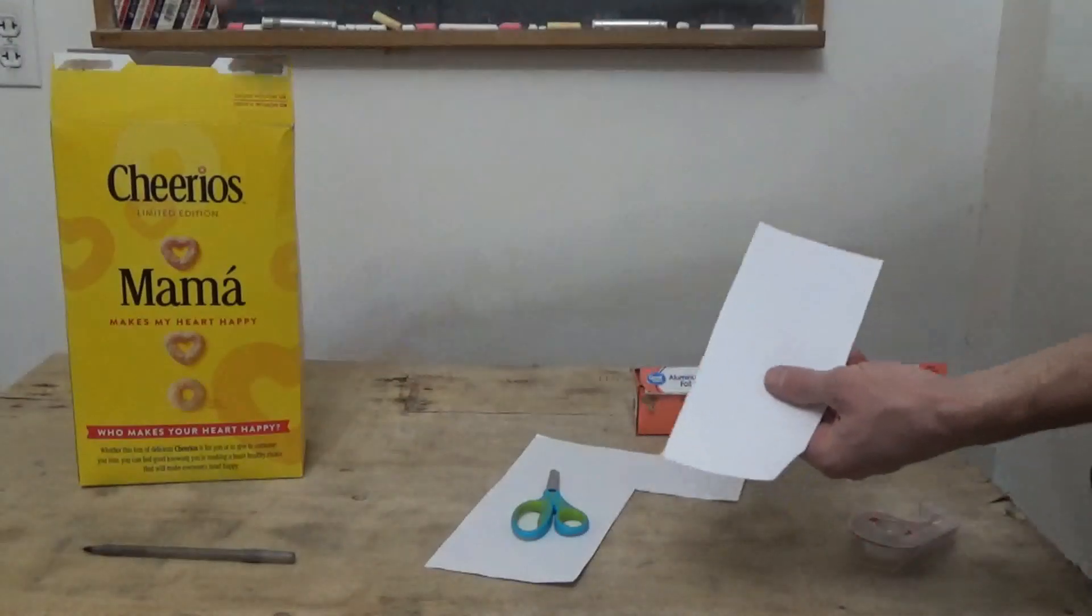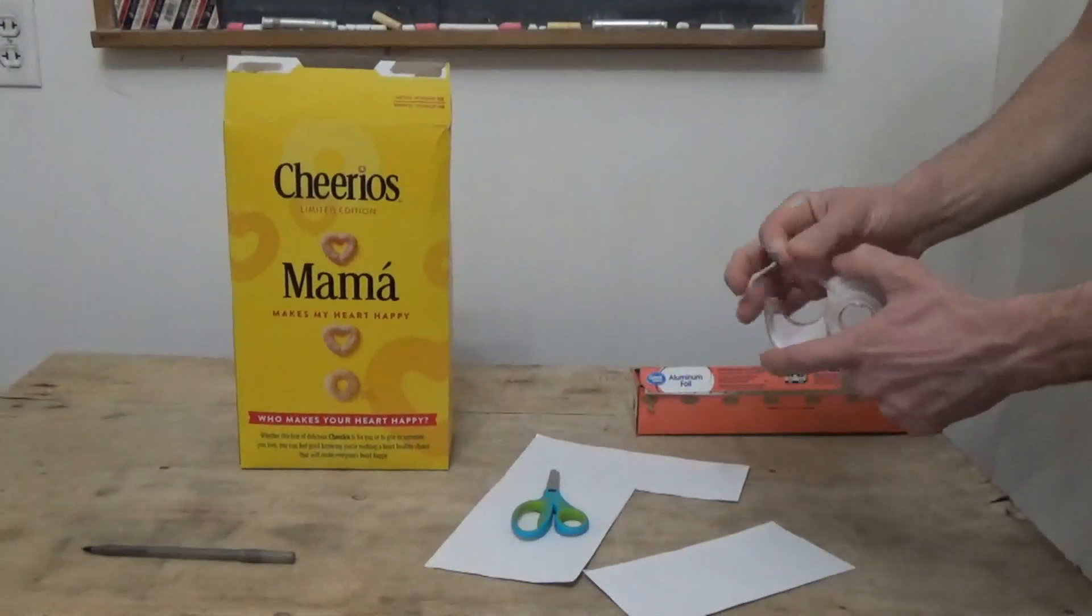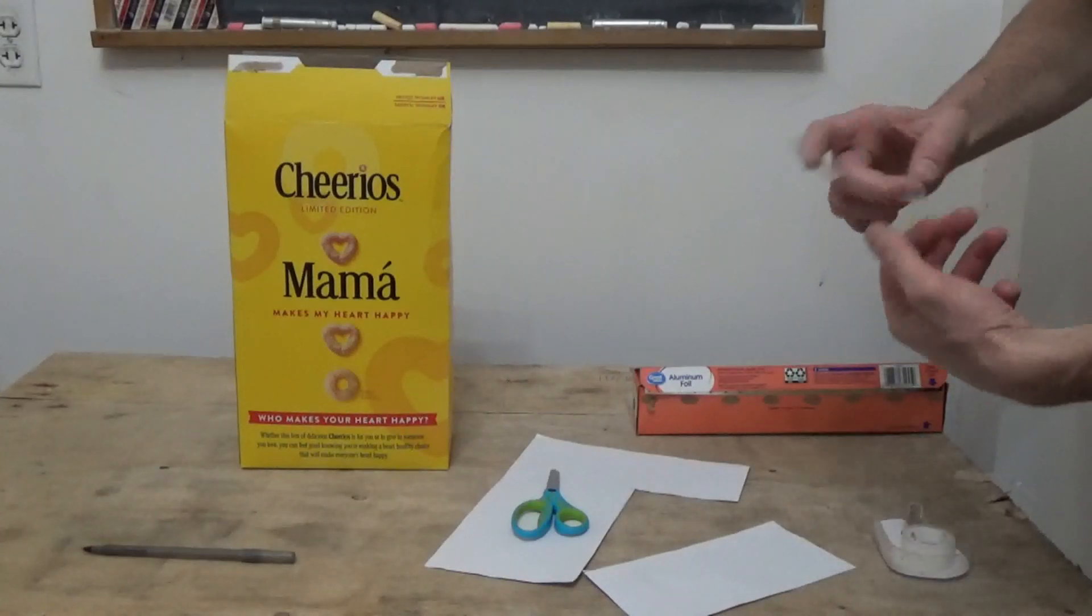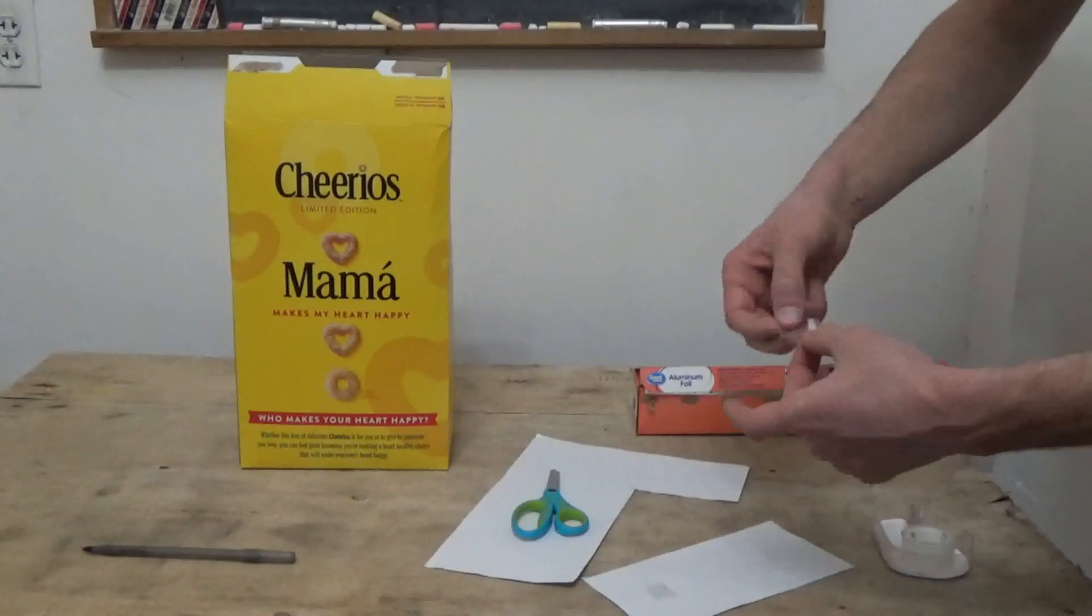This is going to go on the bottom of the box, so we're going to put some tape. We'll roll this up so that it becomes double-sided. That's going to be the view screen for viewing the eclipse.